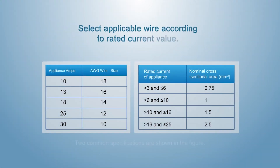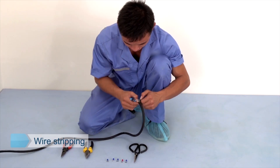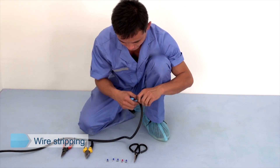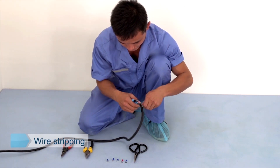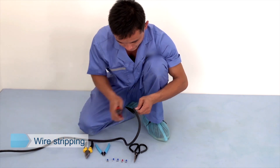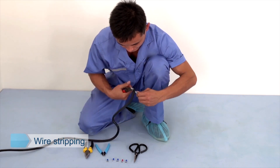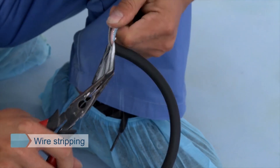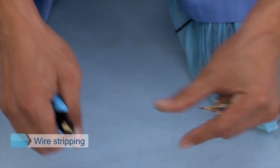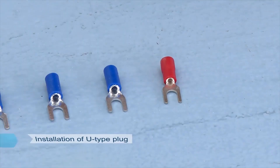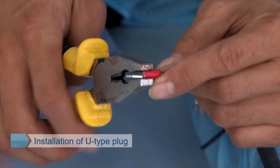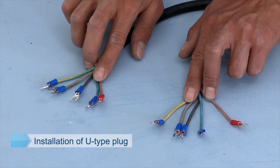Wire stripping: select applicable wire according to rated current value. Two common specifications are shown in the figure. Strip rubber skin at both ends of the connecting wire to uncover the connecting wire. Use a wire stripper to strip the wire core. Use a wire crimper to clamp the U-type plug. Pay attention to distinguish the L-wire from other wires.